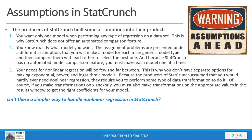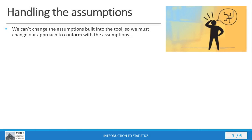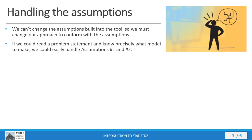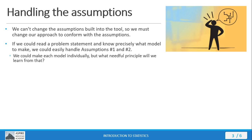Is there a simple way that we can handle non-linear regression in StatCrunch? The answer is yes — we can get around the assumptions that have been built in. We can't change the assumptions built into a tool, but we can change our approach to conform with those assumptions. If we could read a problem statement and know precisely what model to make, we could easily handle the first two assumptions, and that's going to be handled with the table we talked about.